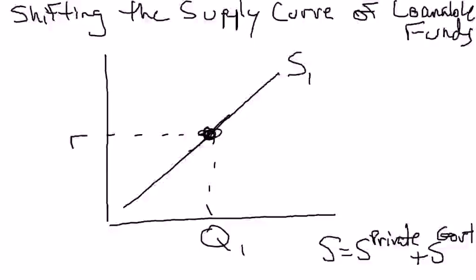Hi everyone. In this video I want to show you how to shift the supply of loanable funds curve — what factors shift it to the right and what factors shift it to the left. The supply of loanable funds is all the funds available in the financial sector to be loaned out towards firms and households for borrowing purposes.